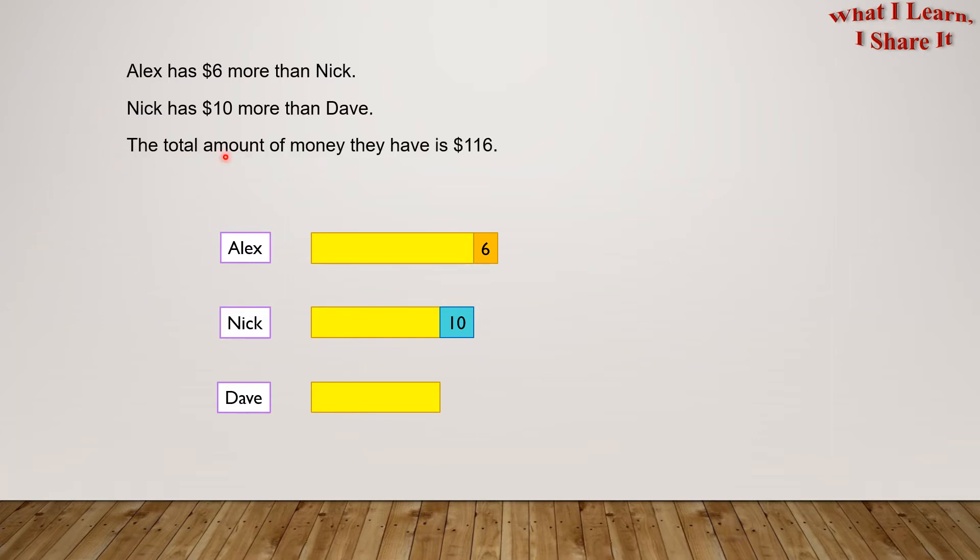The total amount of money they have is $116. This means all these boxes together will make $116. How much money does each of them have? So, we have to find how much money Alex has, how much money Nick has, and how much Dave has.